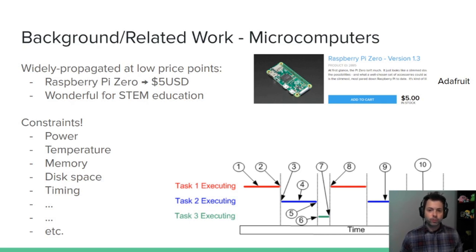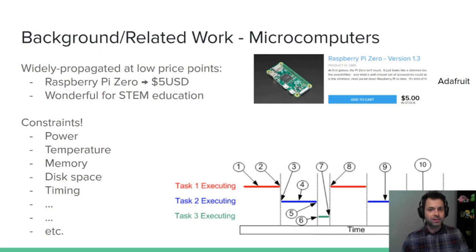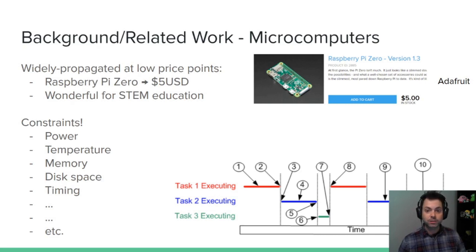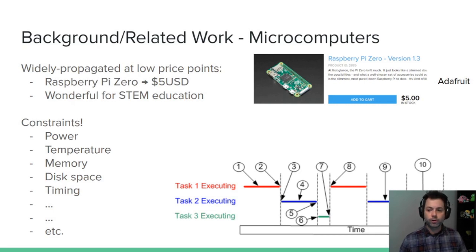A little bit of background on the microcomputing domain. These tend to be non-production-level devices, more for hobbyists, makers, or STEM education-type projects, and they tend to be at a very low price point. For instance, the Raspberry Pi Zero is a very small device at only $5 for just the board — no Wi-Fi on this one. There are also more powerful Raspberry Pis, the Pi 4 with up to 8 gigabytes of RAM, as well as Arduinos, BeagleBone, and a ton of other microcomputing devices coming out.